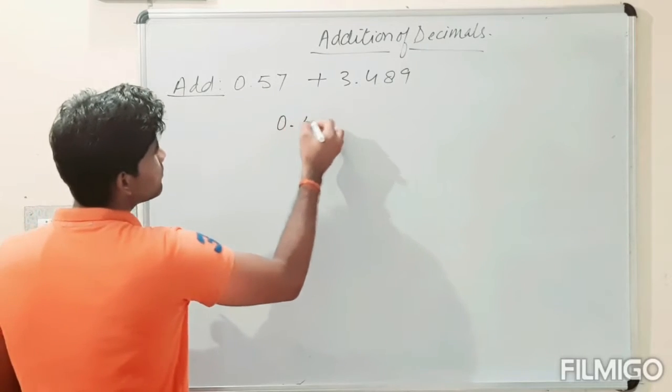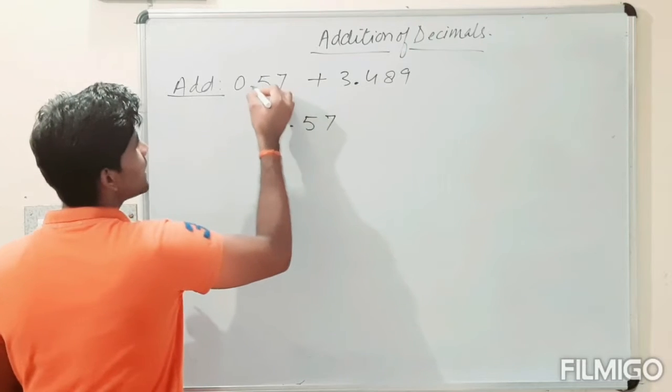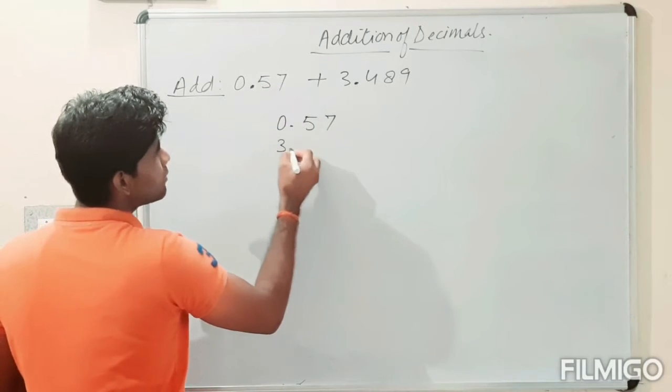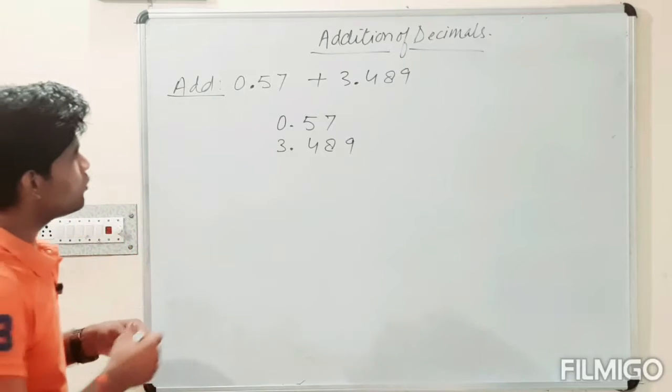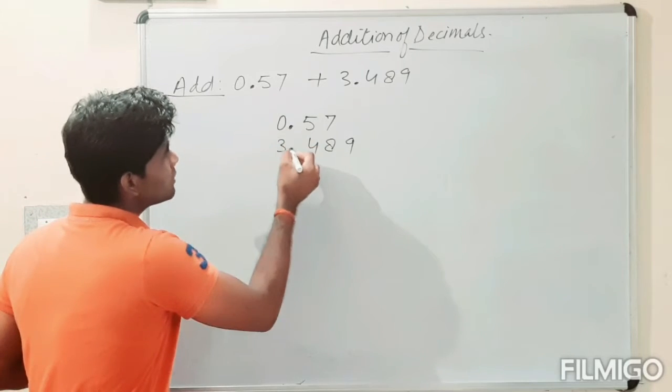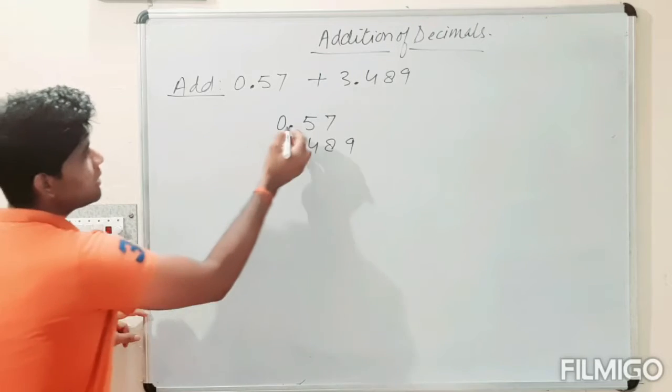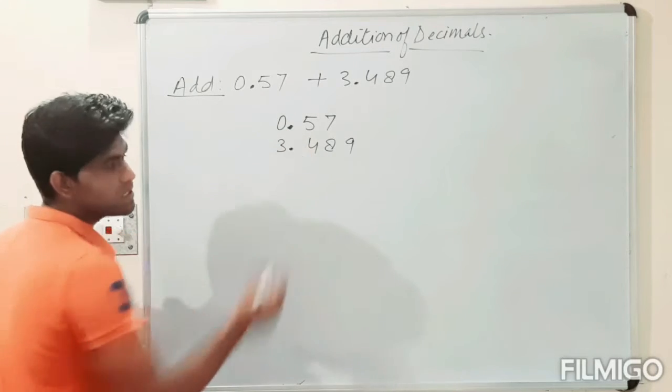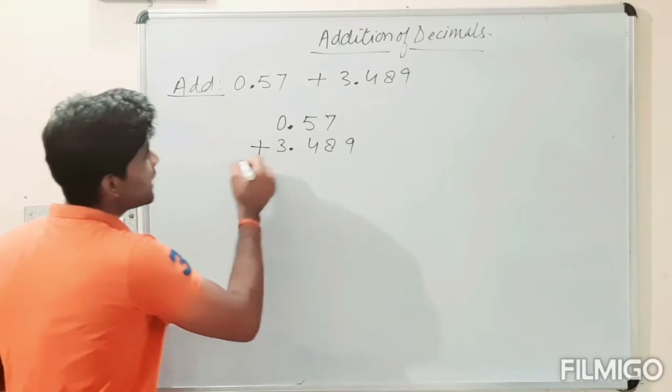Now, the 0.57 plus, look here it is the point that is located, then 3.489. Look, you need to give the place of these decimal numbers beneath each other. You need to add it.